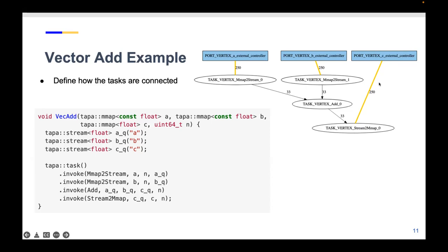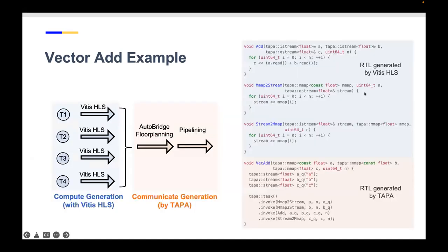Back to our concept of decoupled computation and communication: to compile this program, TAPA passes the 'add', 'memory_map_to_stream', and 'stream_to_memory_map' functions to Vitis, which handles RTL generation for those three. However, the top function—vector_add—has its RTL completely generated by TAPA. This is where the magic happens: TAPA determines how to compose the sub-tasks together.